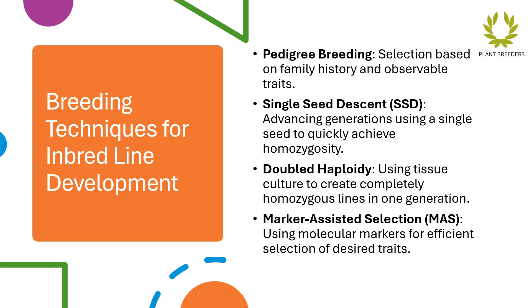Breeding techniques for inbred line development include: pedigree breeding, selection based on family history and observable traits; single seed descent (SSD), advancing generations using a single seed to quickly achieve homozygosity; doubled haploidy, using tissue culture to create completely homozygous lines in one generation; and marker-assisted selection (MAS), using molecular markers for efficient selection of desired traits.